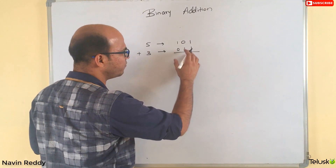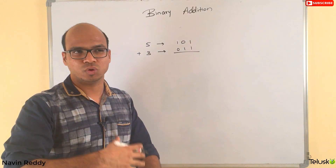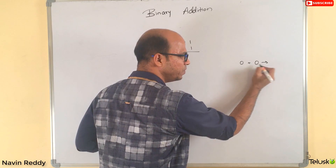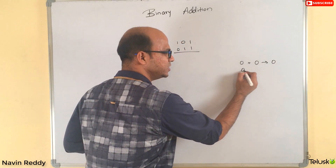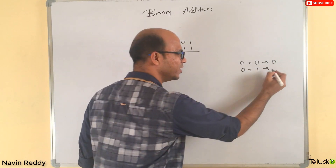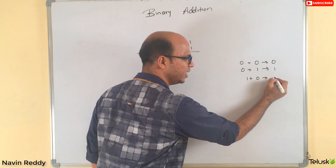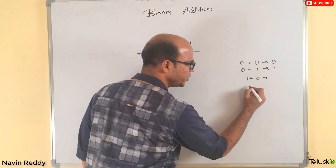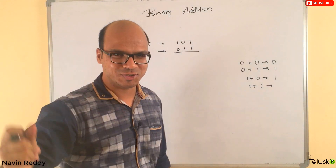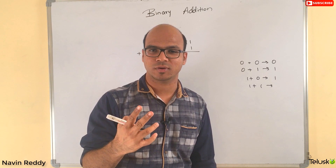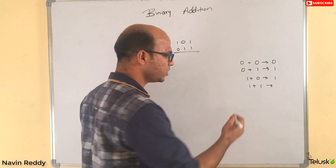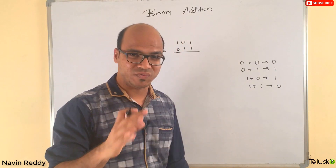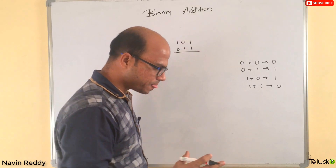Before adding, let's learn the rules for adding two binary digits. Zero plus zero gives zero. Zero plus one is obviously one. One plus zero is again one — all normal from what we learned in childhood. But the moment you get one plus one, you might think the answer is two. Unfortunately, in binary format we don't have two — we only have zero or one. So the addition of one and one is actually zero.